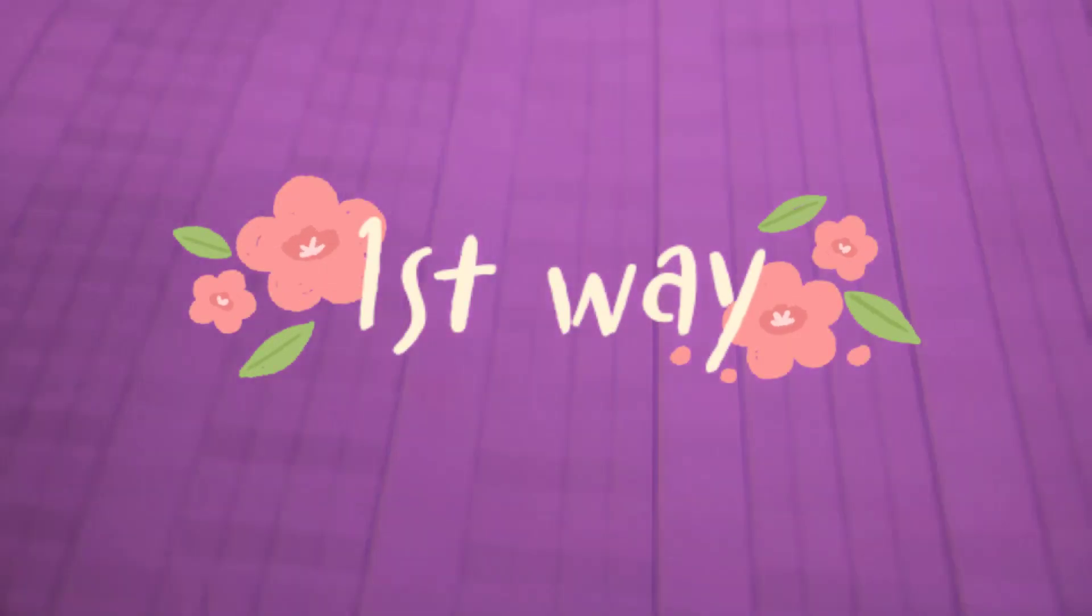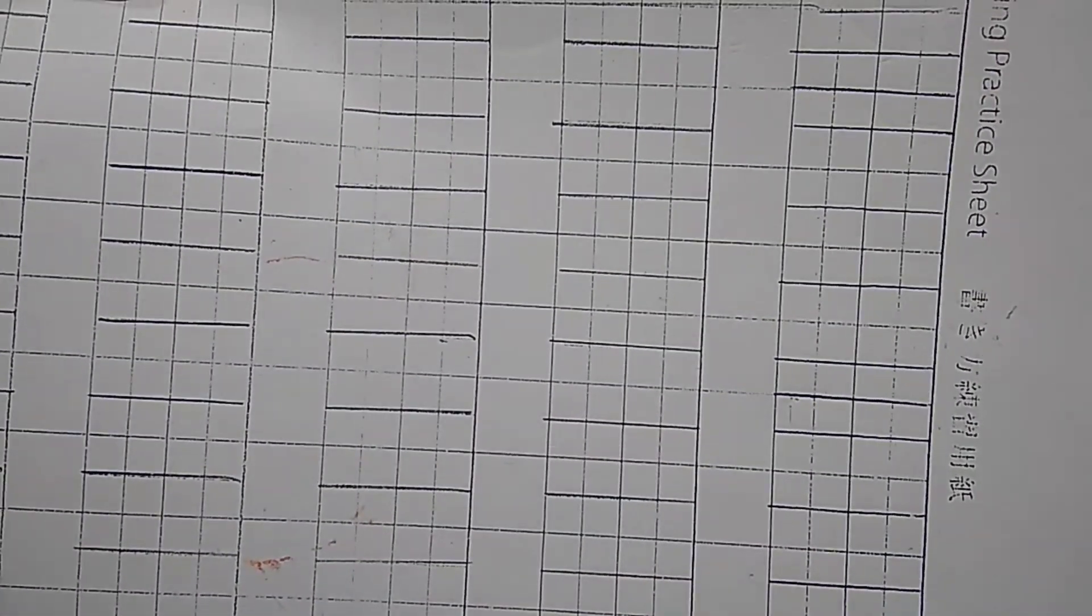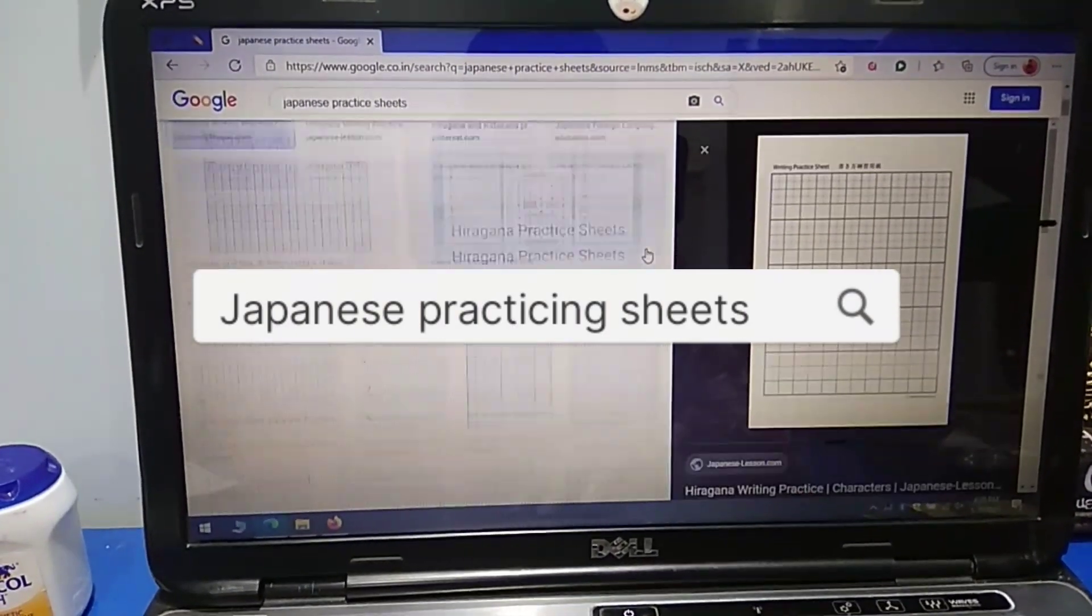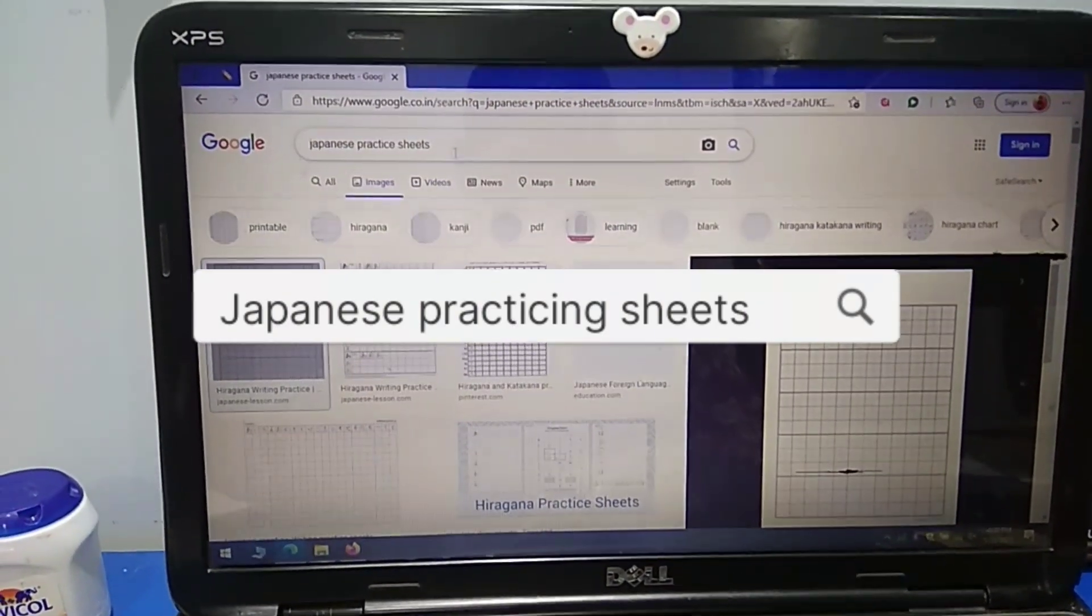So first, you can use this type of paper for practicing Hiragana, Katakana and Kanji. You can find it on Google by searching Japanese practicing sheet.